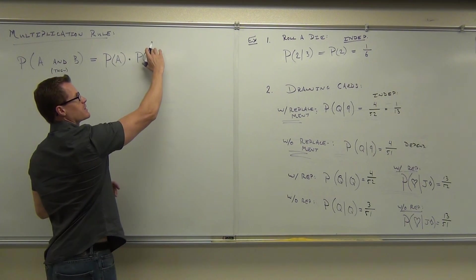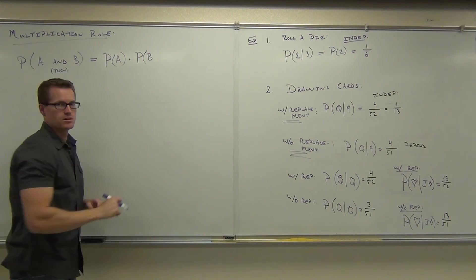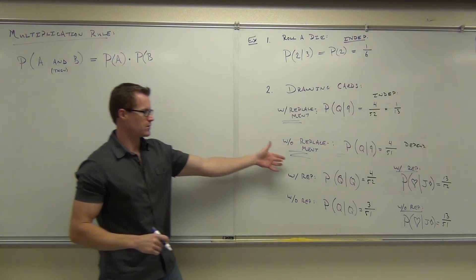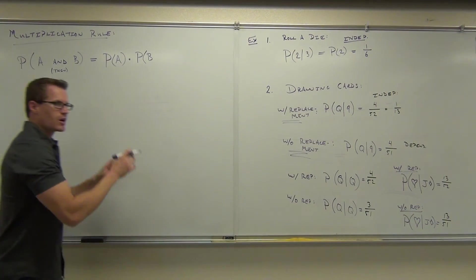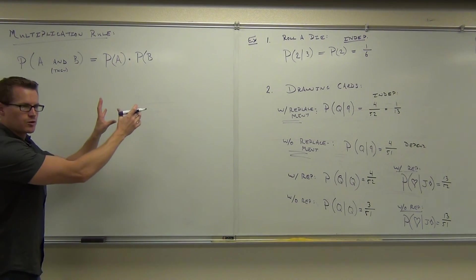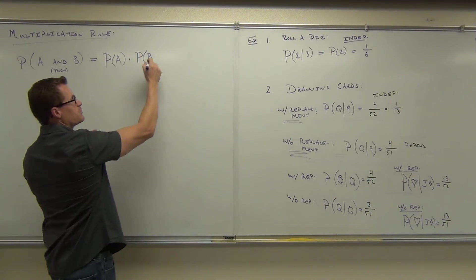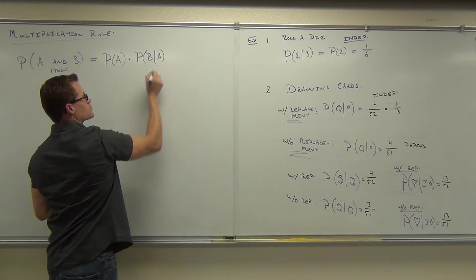However, is it possible that A can affect event B? Yeah, we just saw that, right, right here. Without replacement. It affects it. So, we have to say, not only is it probability of A times probability of B, it's probability of A times the probability of B, given that A has just happened.